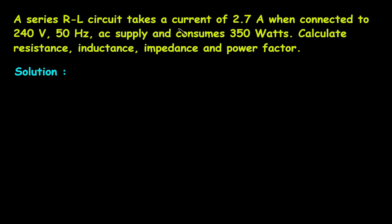A series RL circuit takes a current of 2.7 Ampere when connected to a 240V, 50Hz AC supply and consumes 350W. Calculate resistance, inductance, impedance, and power factor.